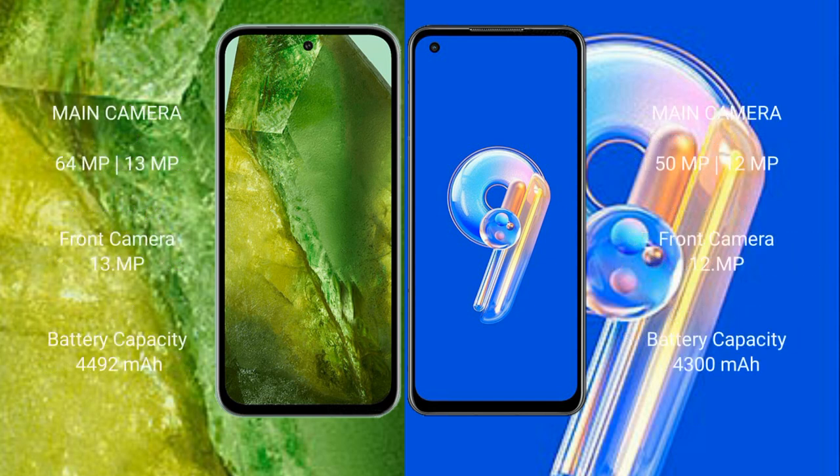Google Pixel 8a features a rear dual-camera setup of 64MP plus 13MP, and a front camera of 13MP. Asus Zenfone 9 features a rear dual-camera setup of 50MP plus 12MP, and a front camera of 12MP.